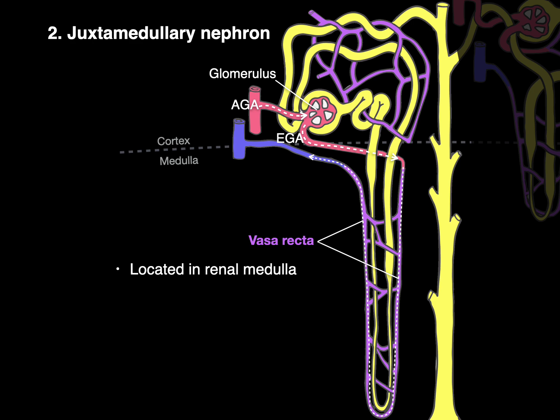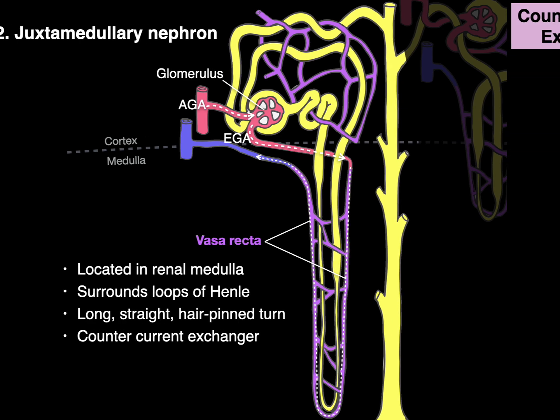So the key to this is the vasa recta are located in the renal medulla and they surround these long loops of Henle of juxtamedullary nephrons and they're long straight hairpin turn. Vasa means vessel, recta means straight and they're responsible for the countercurrent exchanger. Let's talk about that.